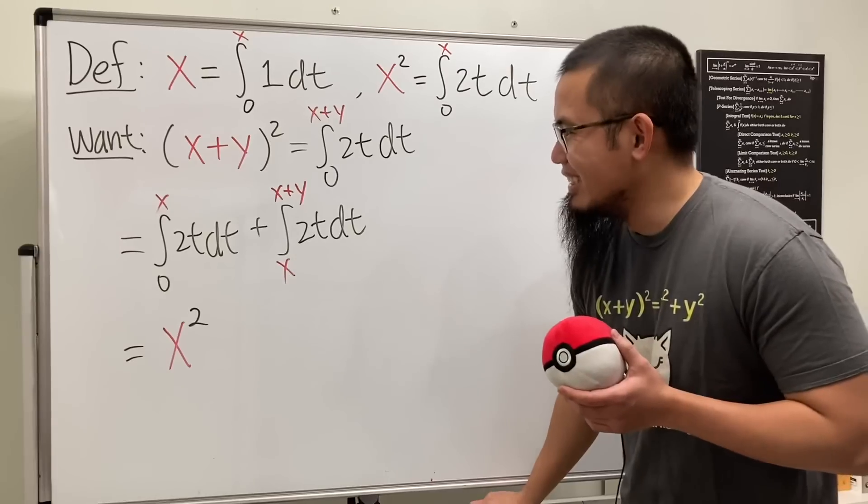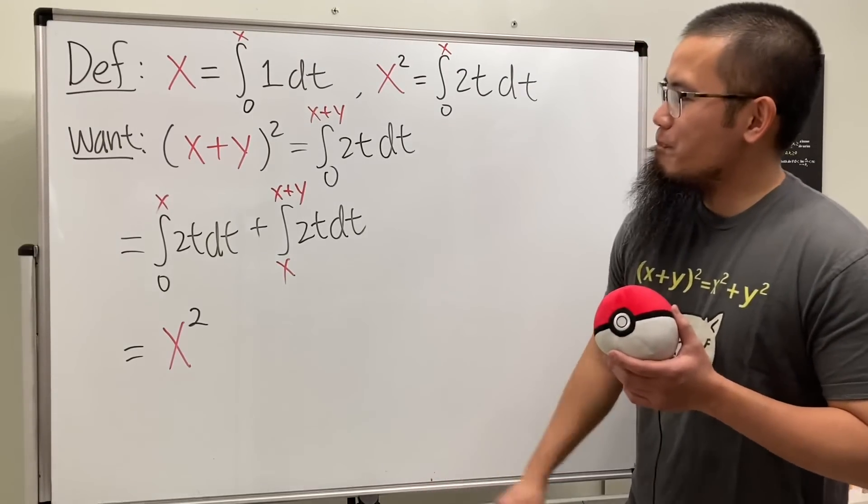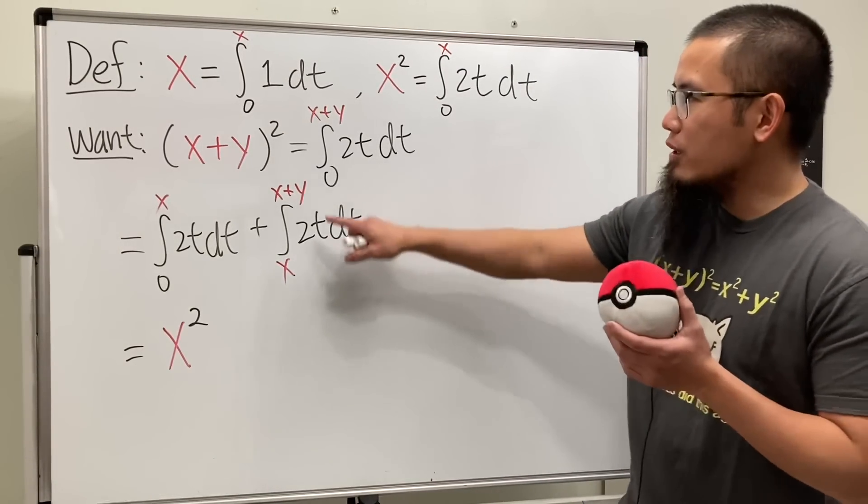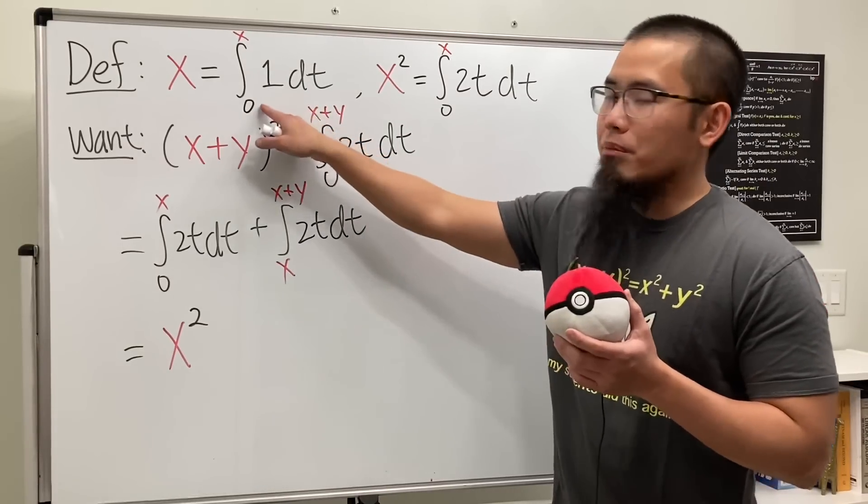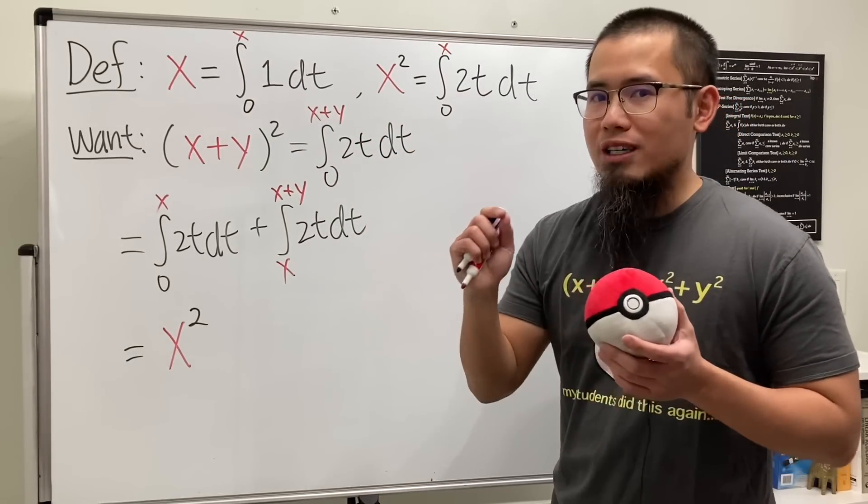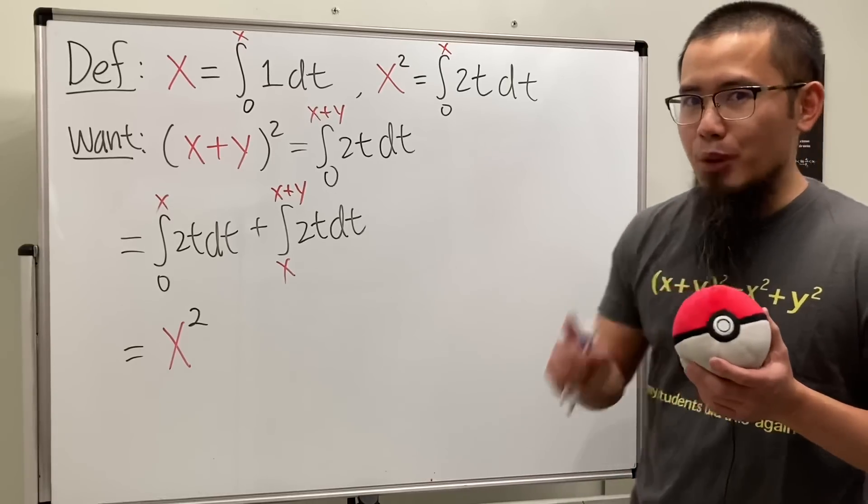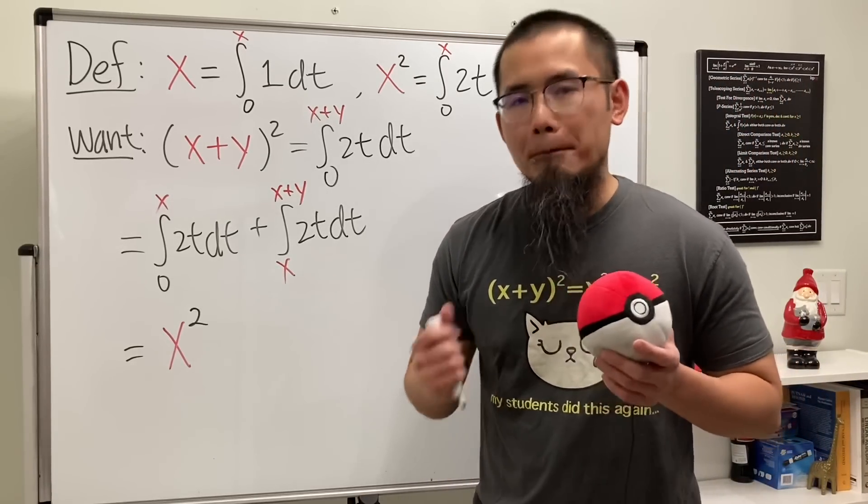Well, have a look right here. You see, here we have x. We don't like that. Because in order for us to use these definitions, we must have the integrals going from 0. So let's use the most powerful integration technique, meaning substitution.